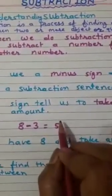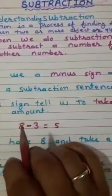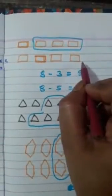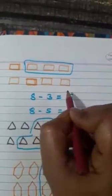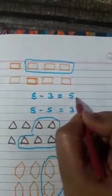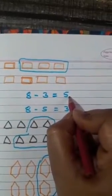We have already learnt the subtraction of 1 digit number, so let's revise here. There are 8 rectangles: 1, 2, 3, 4, 5, 6, 7, 8. Take away 3 rectangles. How many left? 1, 2, 3, 4, 5. So we can write in this way: 8 minus 3 equal to 5.